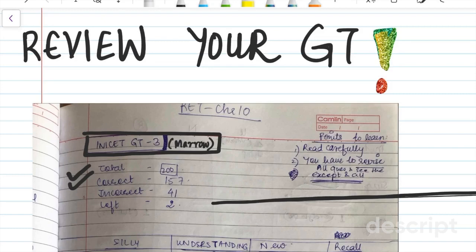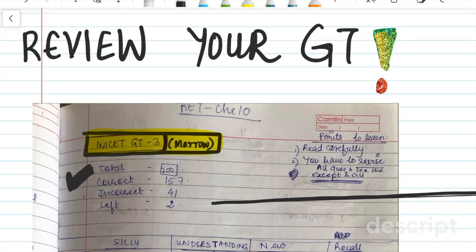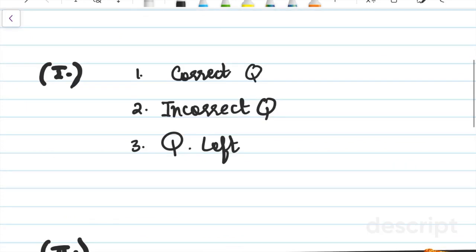So the first section is where you write about which exam you've given, which GT you've given and the source so that you can review this GT whenever you want to later from the app itself. The another section is the major exam credentials and it is very important. So you write the correct number of questions, the incorrect number of questions you've gotten and the questions you've left.